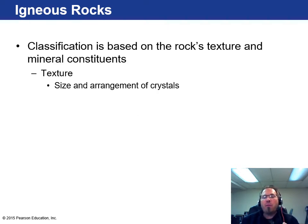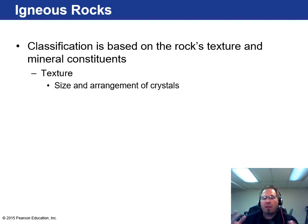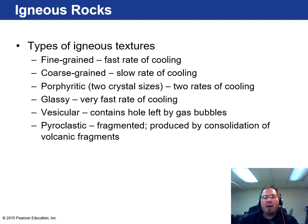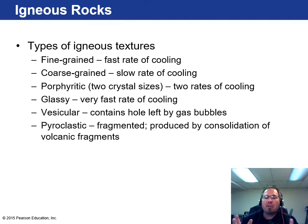Classification for igneous rocks is based on texture and minerals — the size and arrangement of crystals. Things like fine grain, coarse grain — that's how we distinguish one type of igneous rock from another. We have fine grain, coarse grain, porphyritic (which is two crystal sizes), glassy (obsidian), vesicular (which has bubbles), and pyroclastic (which is very fragmented). Examples of all these will be shown in the next slides.